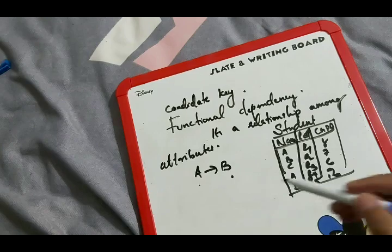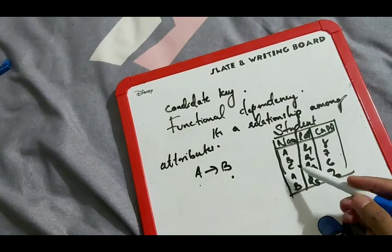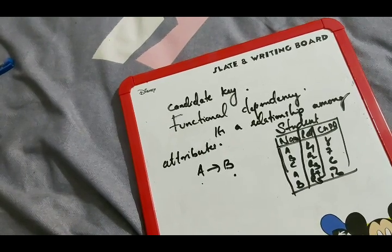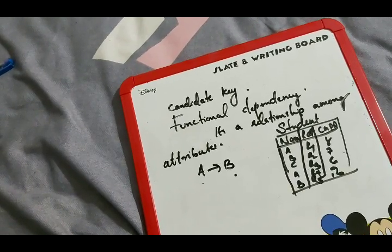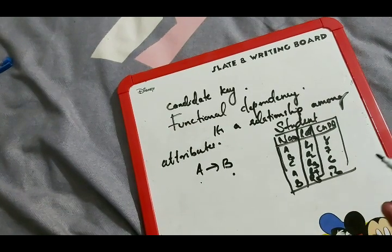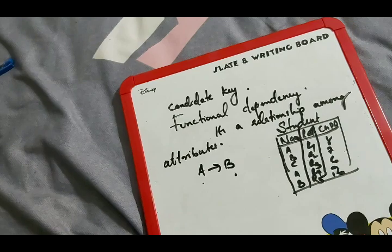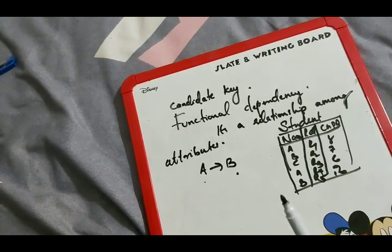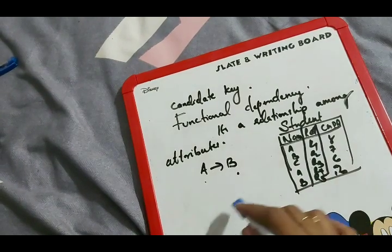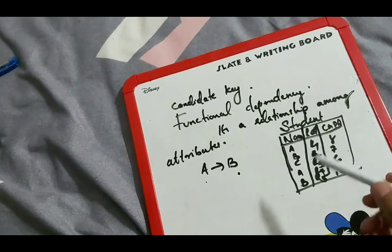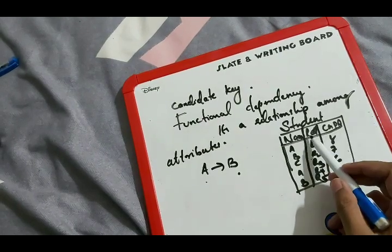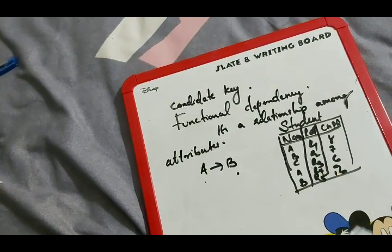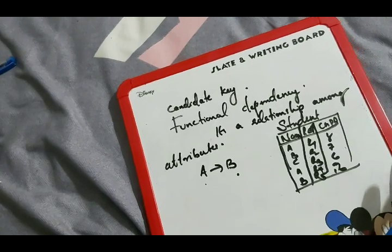Because in our classroom there can be multiple students with the same name — for example, multiple students named Akhil. So we cannot uniquely identify a student by name alone. However, if we can identify a unique attribute in the table, such as roll number, we can ask the CGPA of a particular roll number.